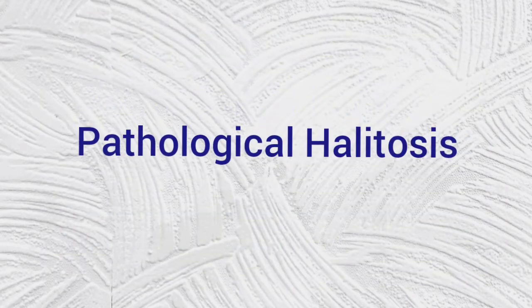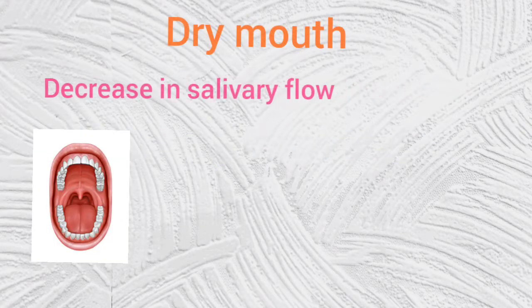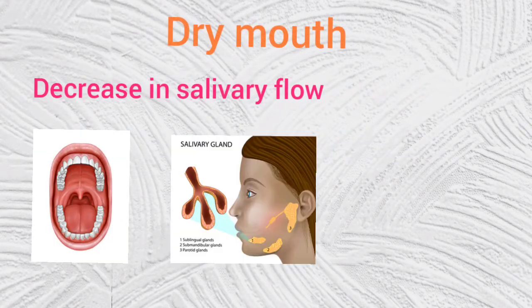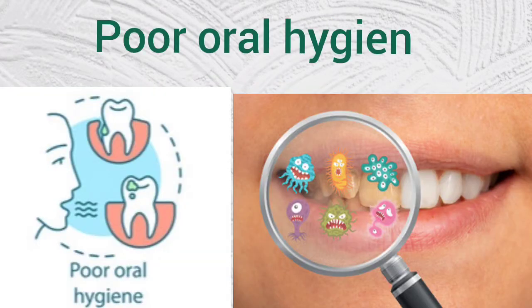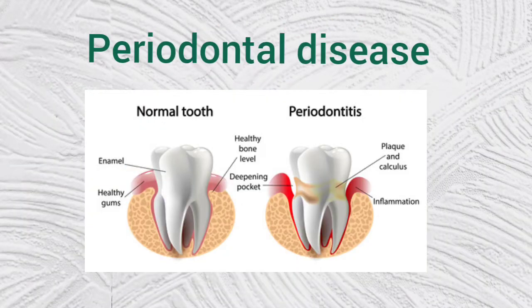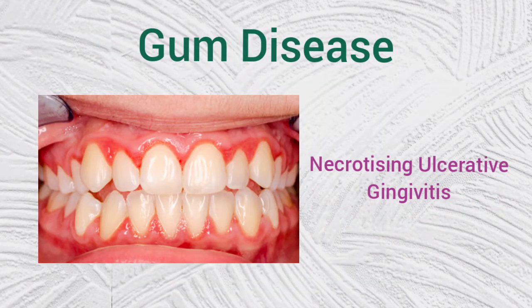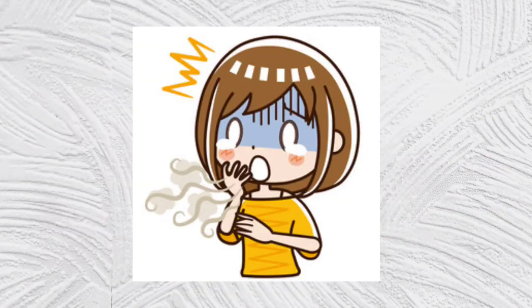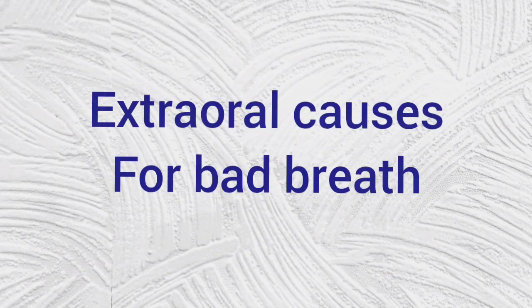Causes for pathological halitosis include dry mouth due to decreased salivary flow from salivary gland dysfunction, poor oral hygiene, periodontal disease, biofilm-coated tongue, pericoronitis, and necrotizing ulcerative gingivitis. Bad breath can also be a problem if you wear dentures and don't clean them every night.